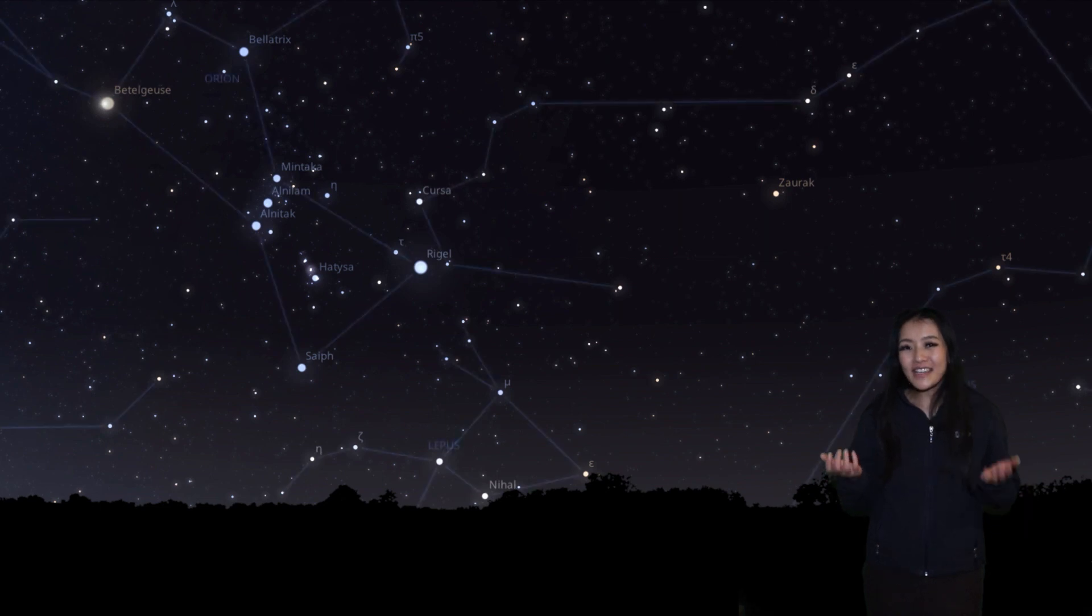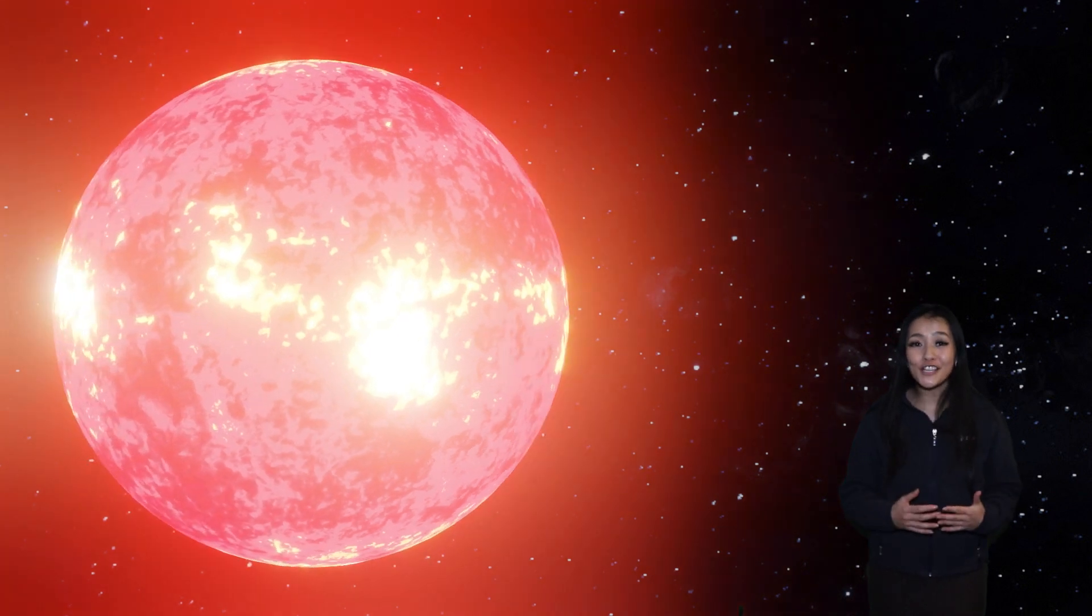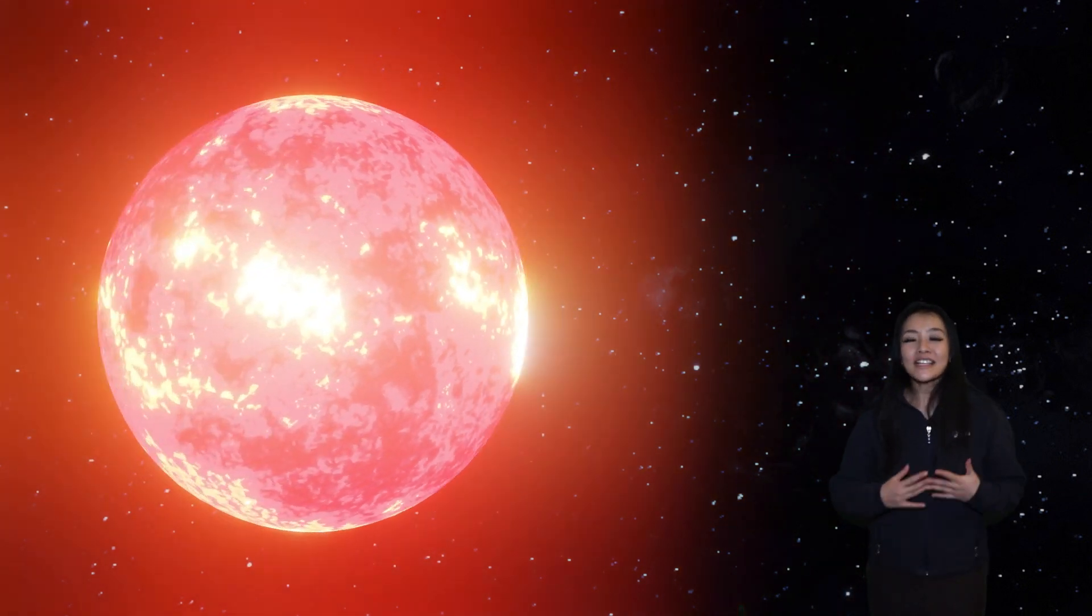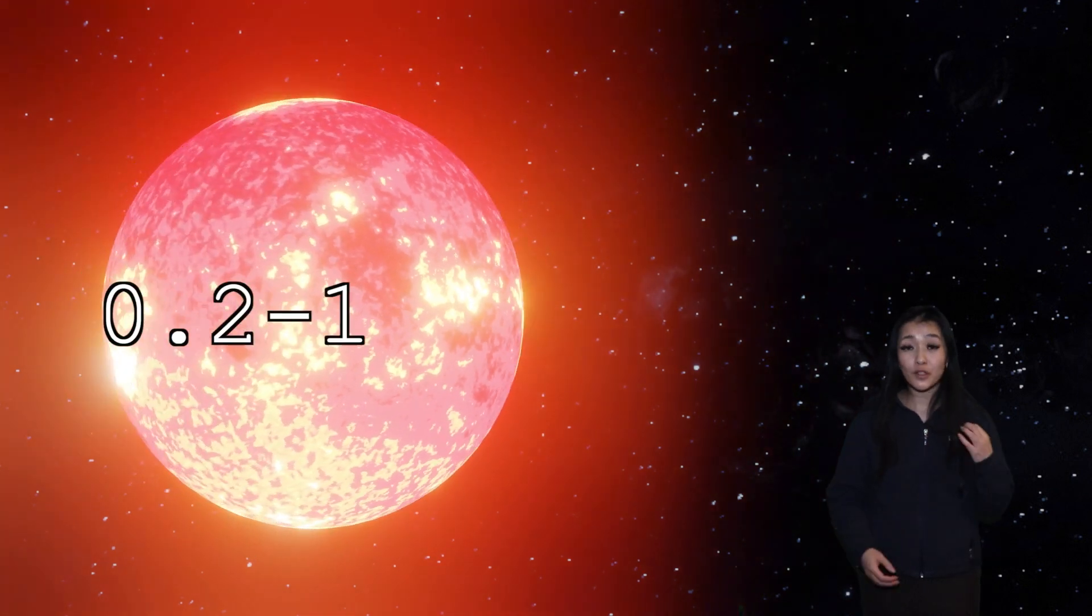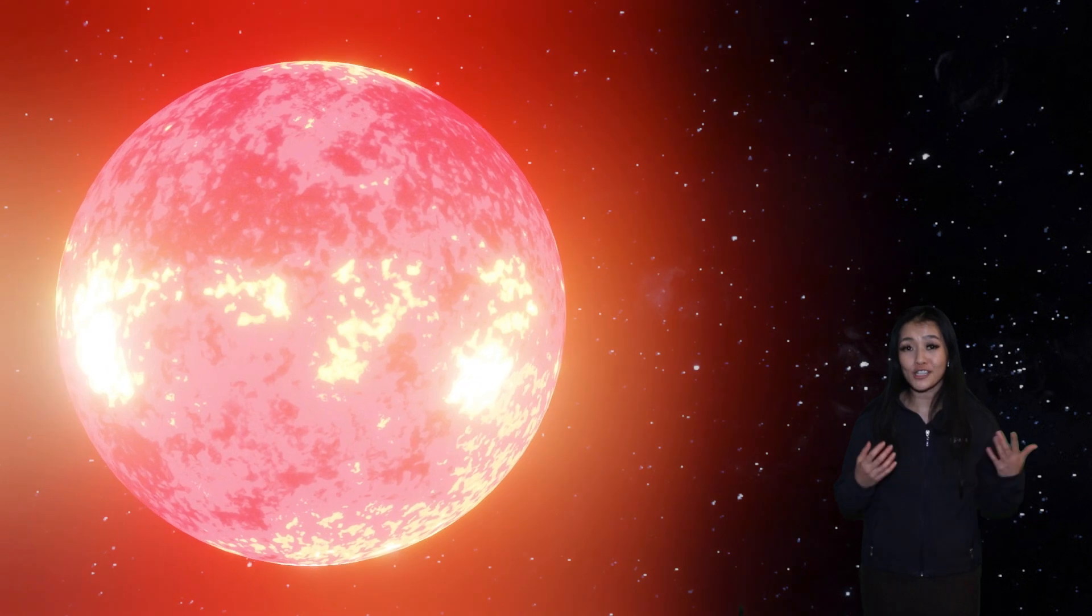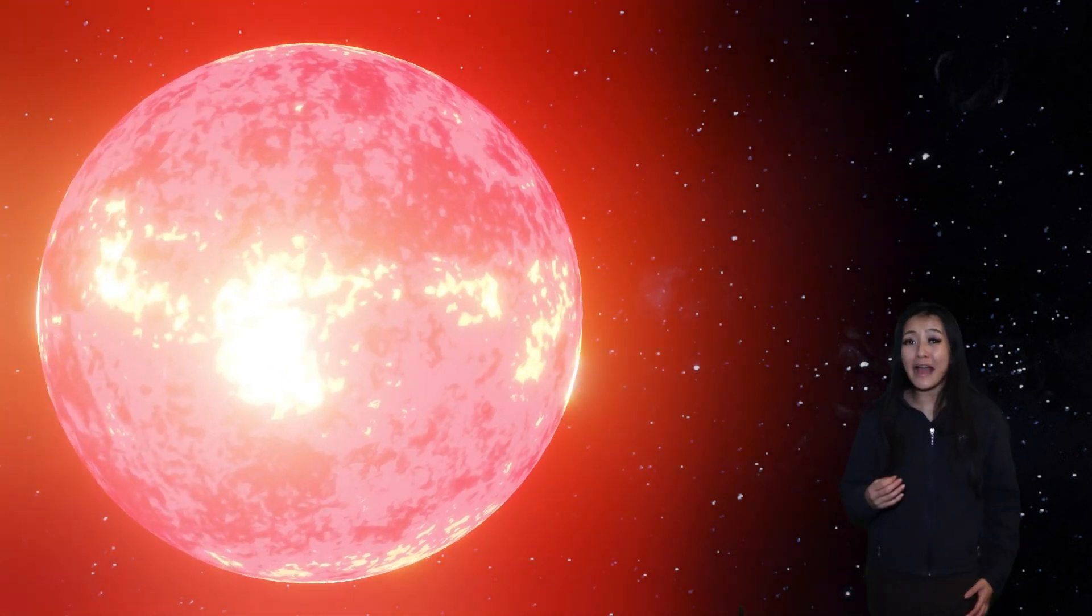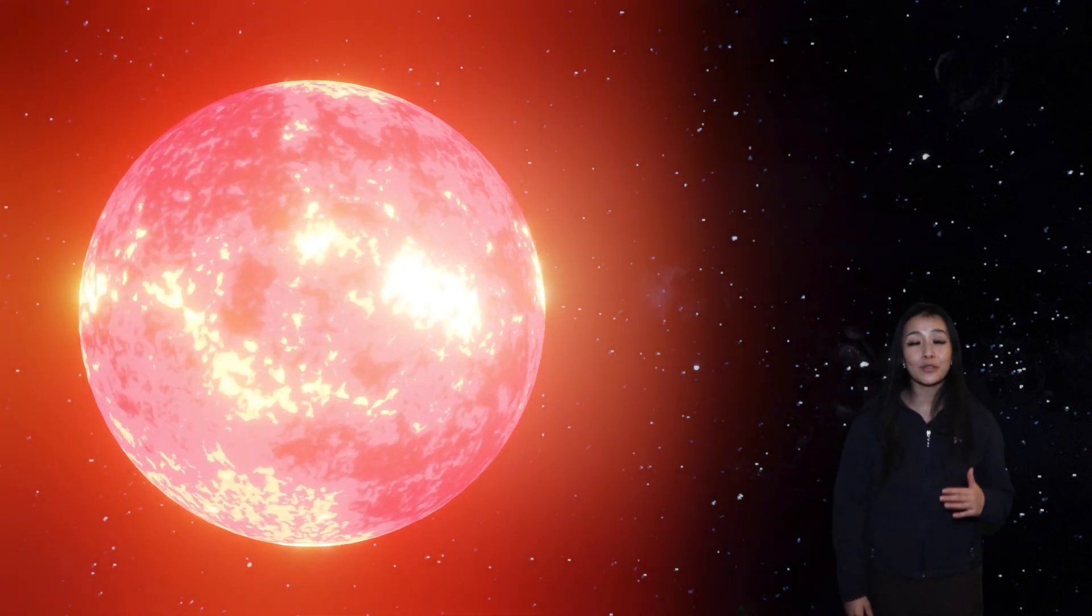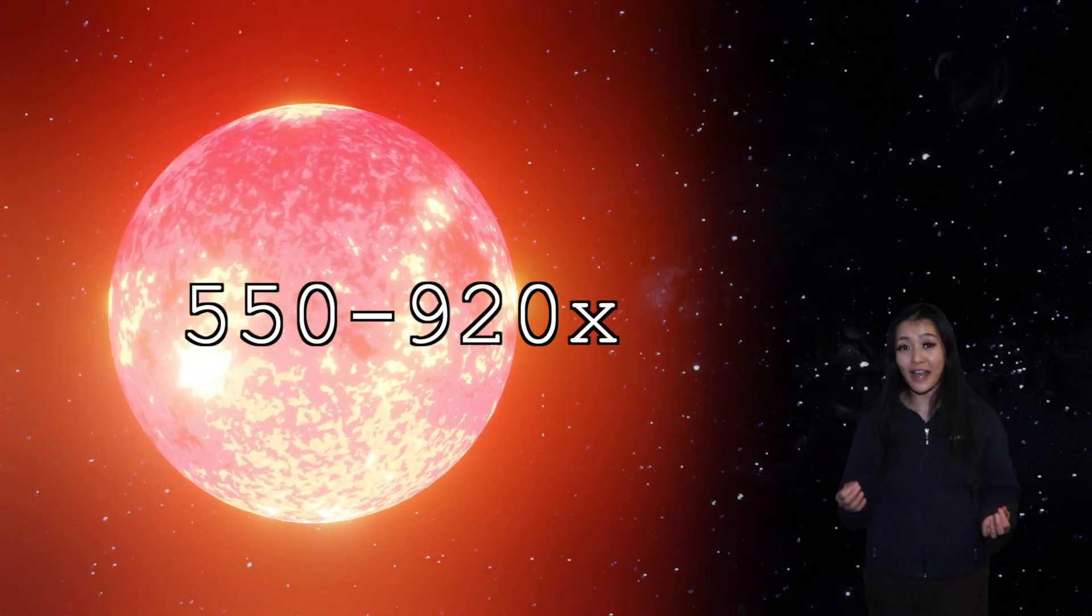The answer is no. You see, Betelgeuse is known to be notoriously variable. Its apparent magnitude can be anywhere between 0.2 and 1.2 magnitudes over a period of about 400 days, and not only is its brightness varying, but its diameter is varying too. The diameter of Betelgeuse can be anywhere between 550 and 920 times the Sun's diameter.